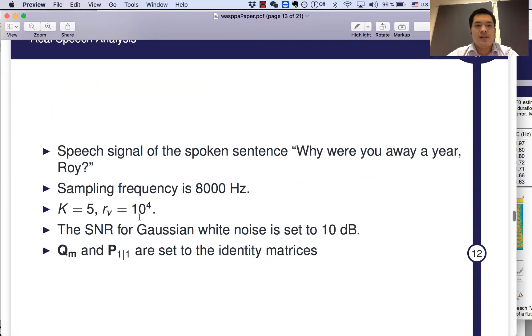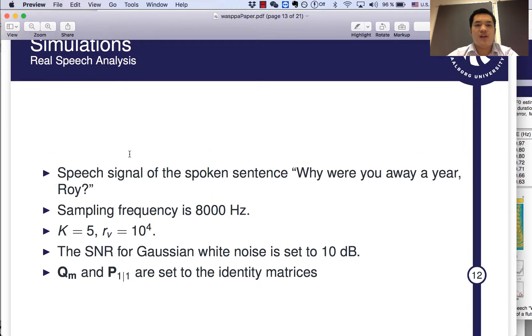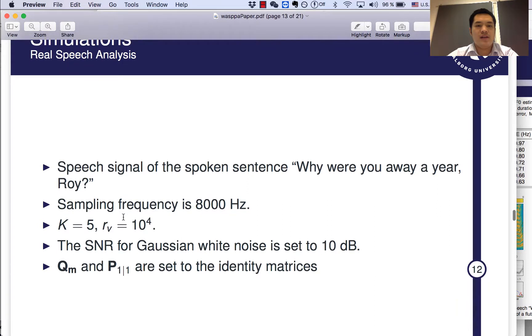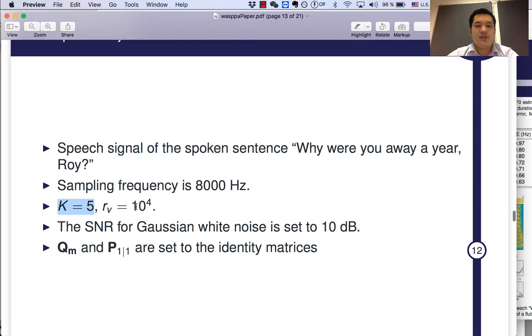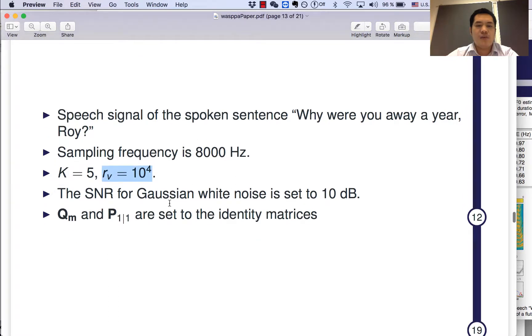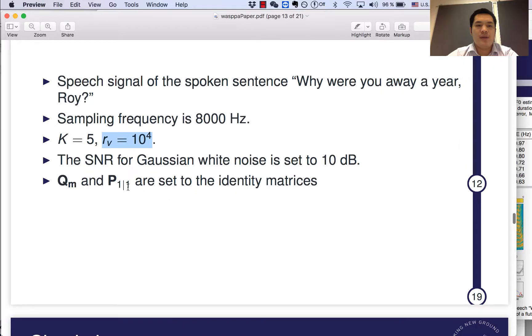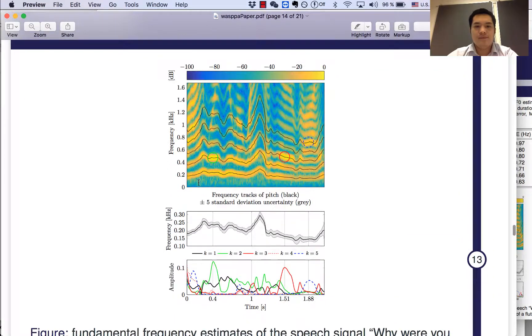Now, let's see some results. First, we test our algorithm for speech signals, 'Why were you away a year, Roy?' The sampling rate is 8,000 Hz. The number of harmonics is set to 5. And the variance of noise is set to 10 to the power of 4. Remember that in Kalman filter, it's not the value of the noise variance that's important. It's the ratio between the noise variance and the state noise variance that's important. The SNR for Gaussian white noise is set to 10 dB, and Q, M, and P are set to identity matrix.